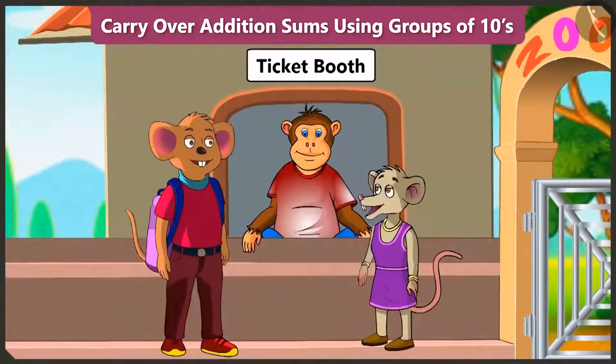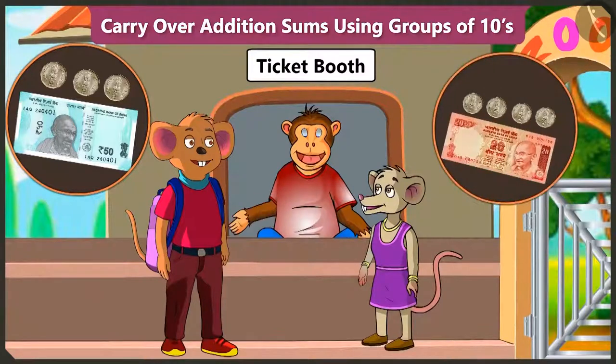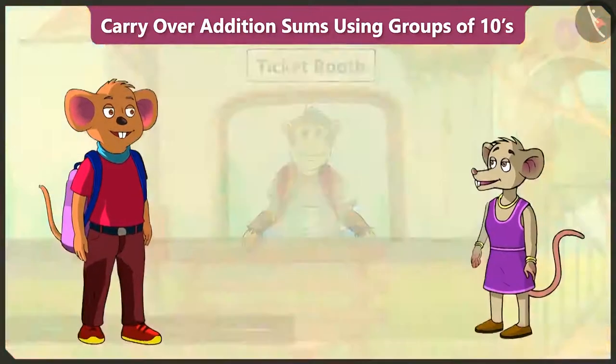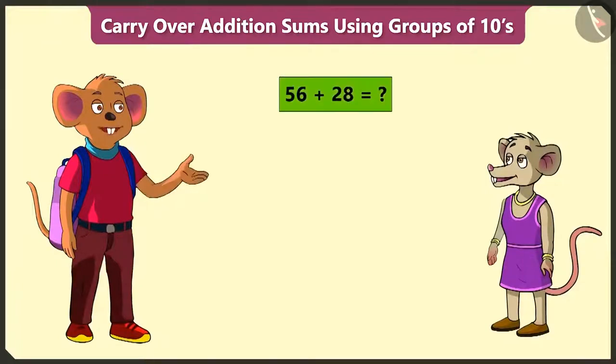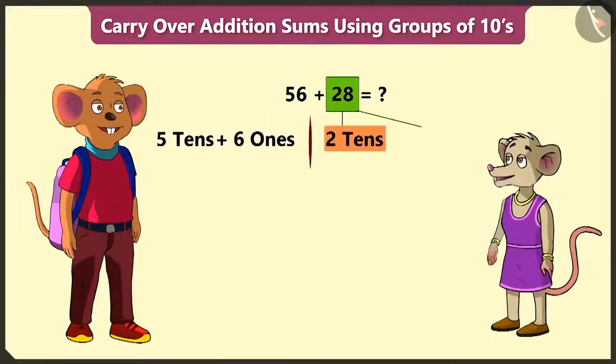Do we have to buy a ticket here also? Yes. Bhaiya, please give us 2 tickets. Your ticket will cost 56 rupees and the younger child's ticket will cost 28 rupees. Chichi, now tell me how much money do we have to pay in total? 56, that is 5 tens and 6 ones and 28, that is 2 tens and 8 ones.